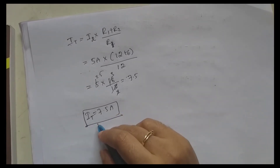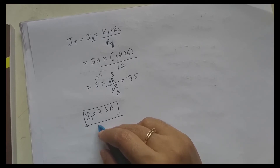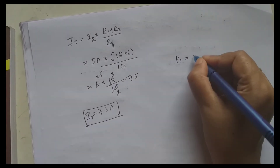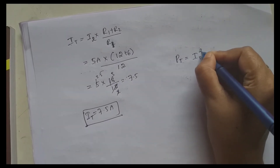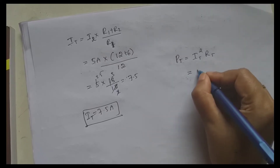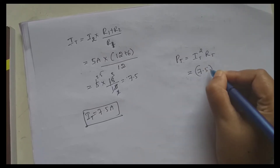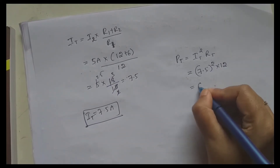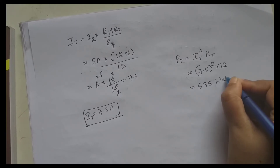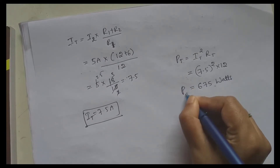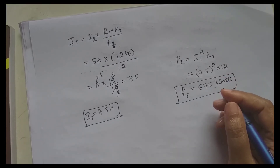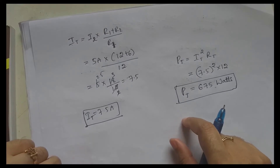Now we know IT = 7.5 A and RT = 12 ohm. PT = IT² × RT = 7.5² × 12 = 56.25 × 12 = 675 watts. So the total power dissipated in the circuit is 675 watts.